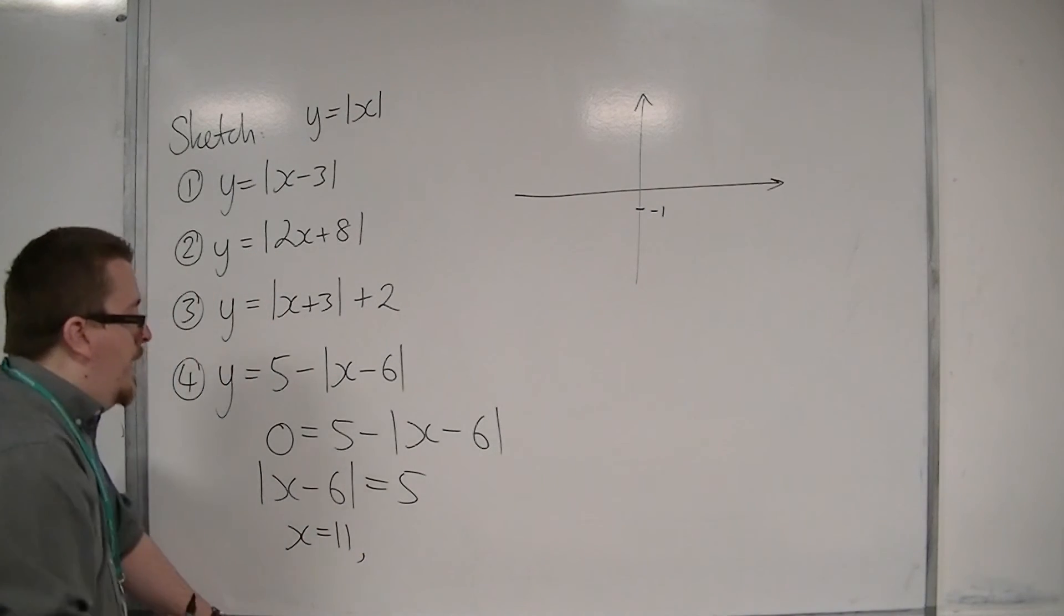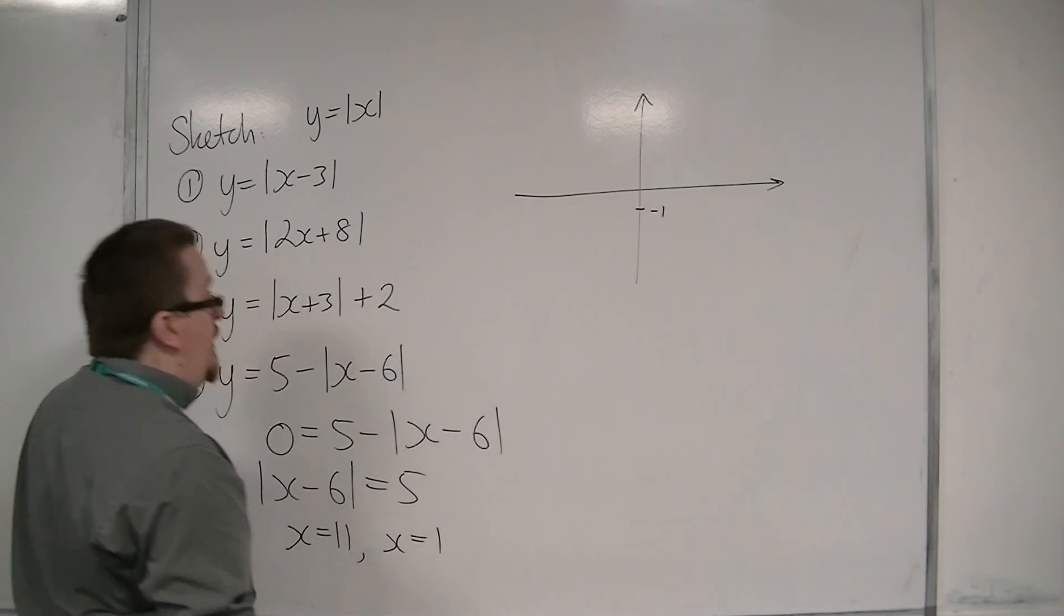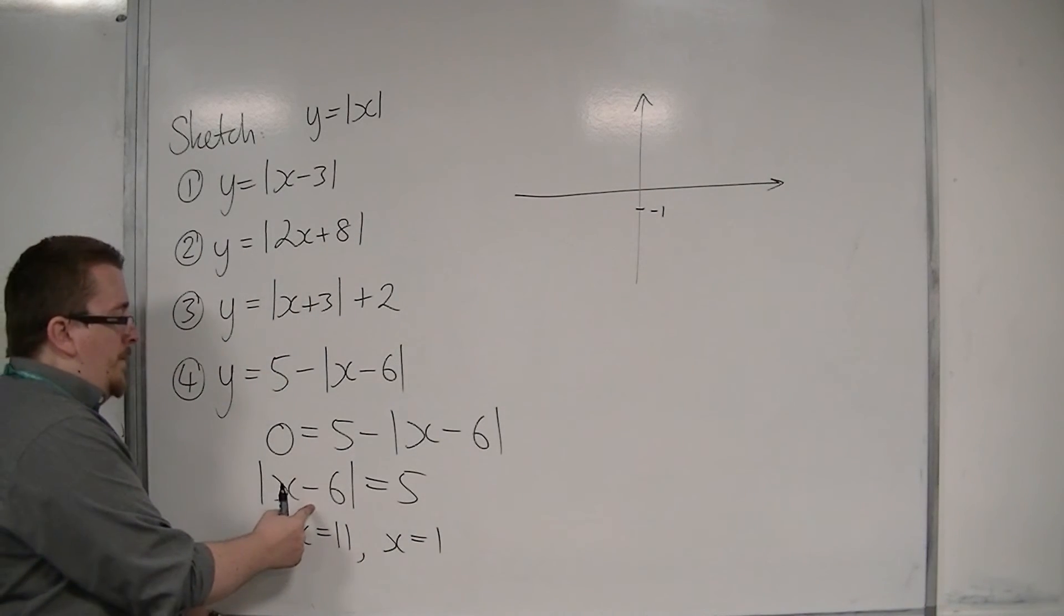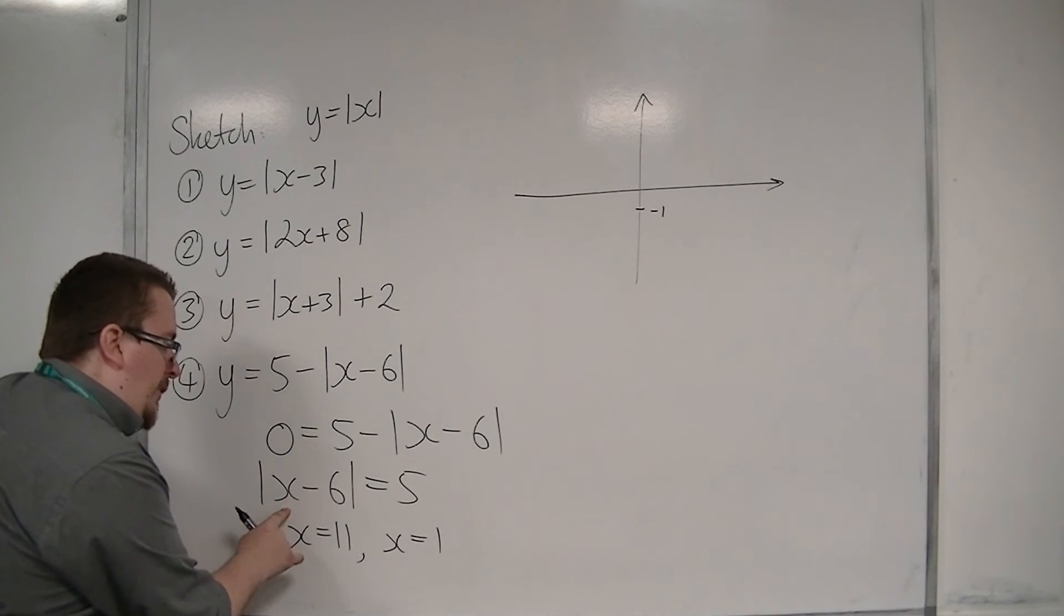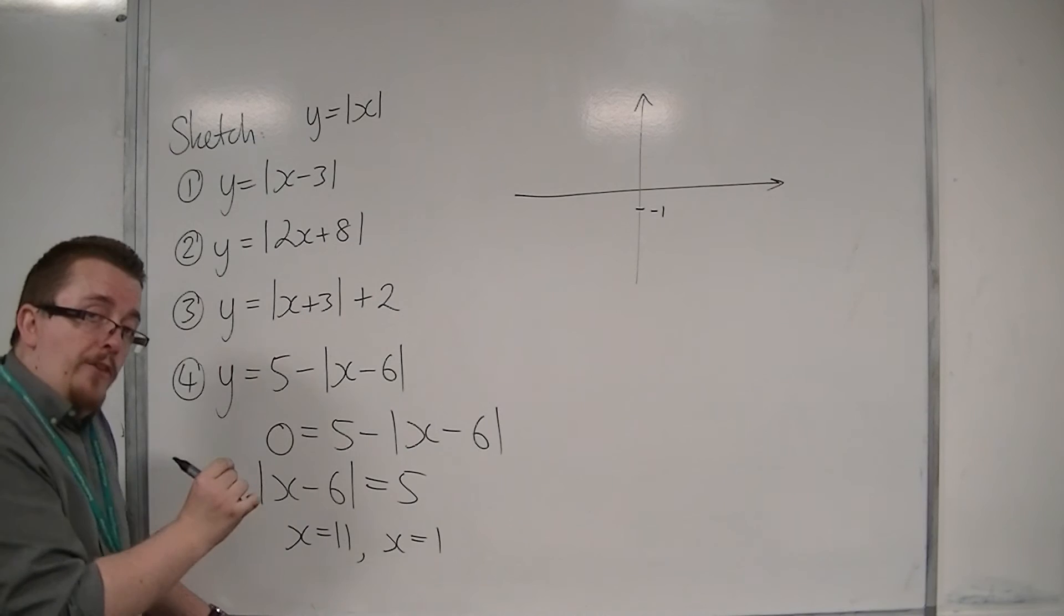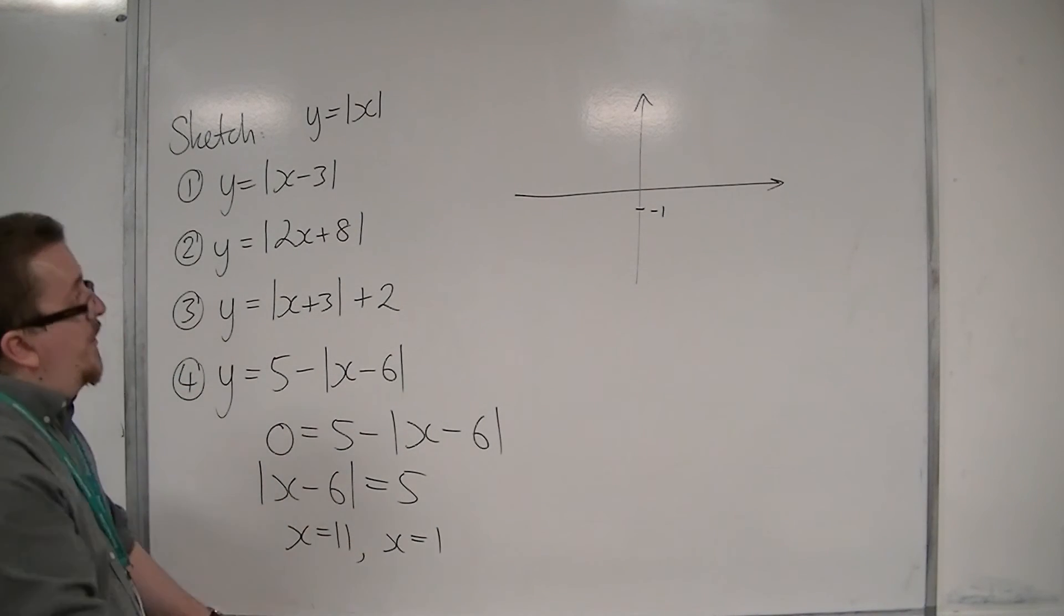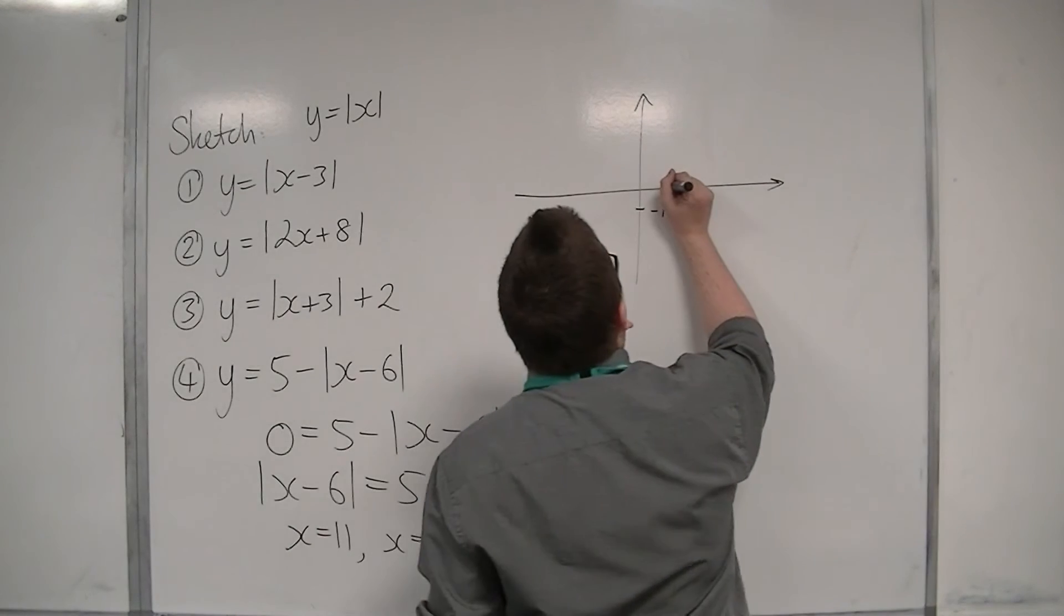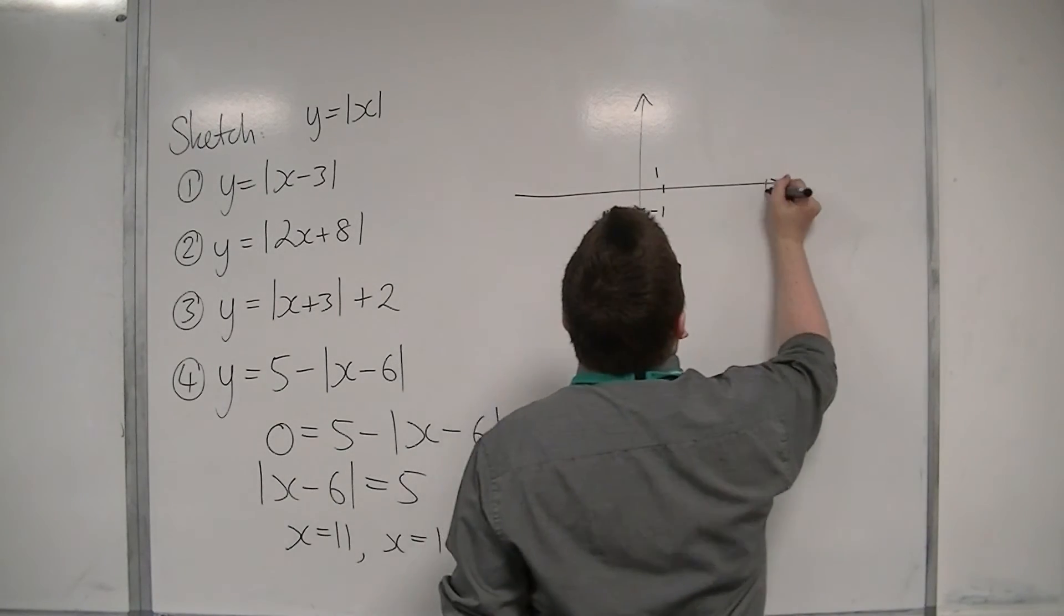Or x could be one. And the reason why x could be one is because if x is one, you have one take away six is minus five, and the modulus of minus five is five. So these are two solutions. So we know that it goes through one on the x-axis and 11.